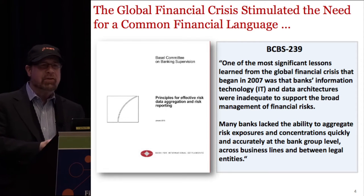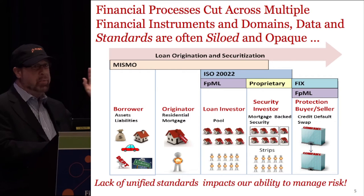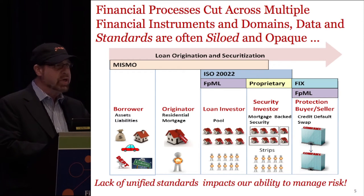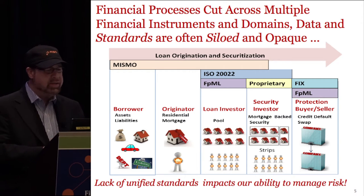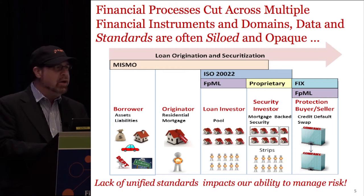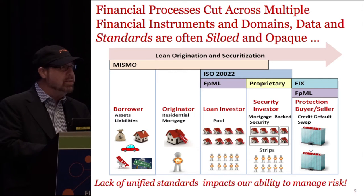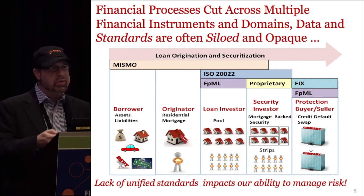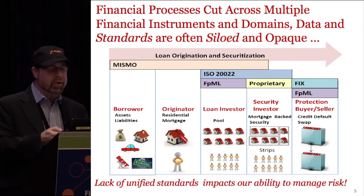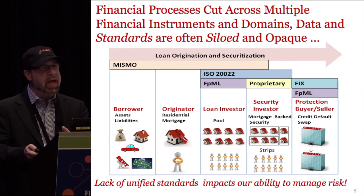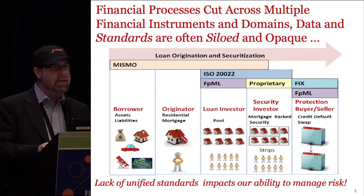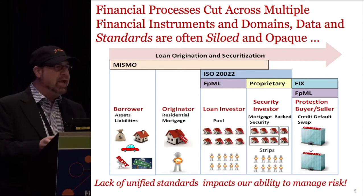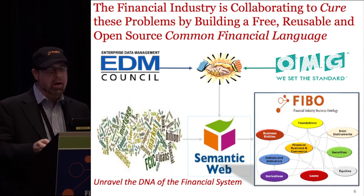Besides fulfilling BCBS 239, if we take a look at many of our major processes — in this case loan origination and securitization, which ties back to the global financial crisis — not only did we discover that data was highly opaque within organizations and across the industry, but standards themselves are in many ways highly siloed and opaque because processes cut across many different standards horizontally. We have the MISMO standard which covers borrowers, loan originators, and loan investors, but going beyond that into many other phases of securitization, there is no single common standard.